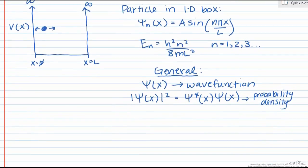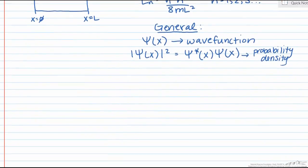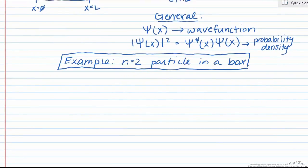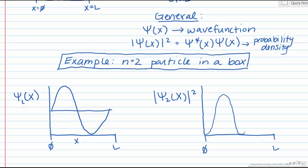For example, let's take a look at the wave function and probability density for the n = 2 state of our particle in a box. On the left, we have our wave function for the n = 2 state, and on the right is our probability density function. Our probability of finding our particle between x and dx is then equal to the magnitude of ψ squared times dx.